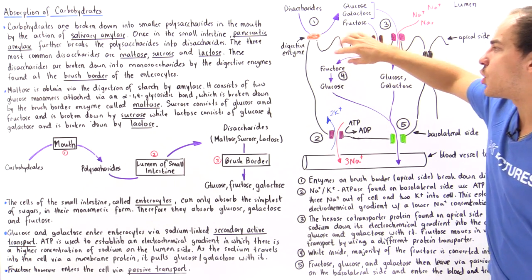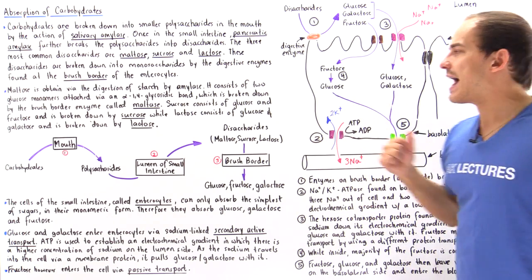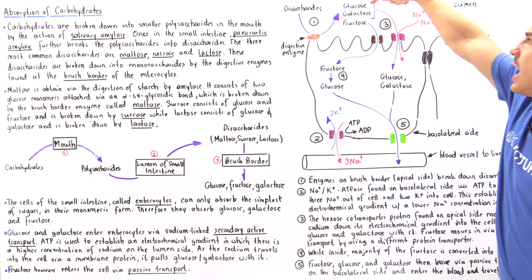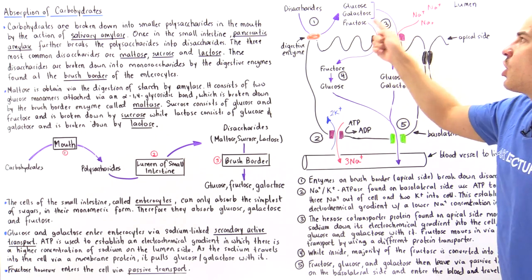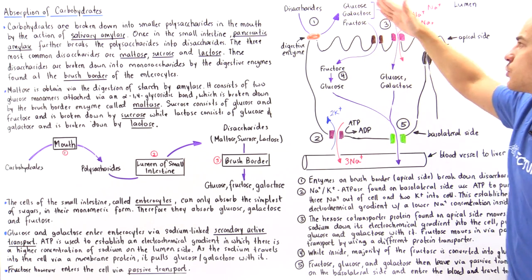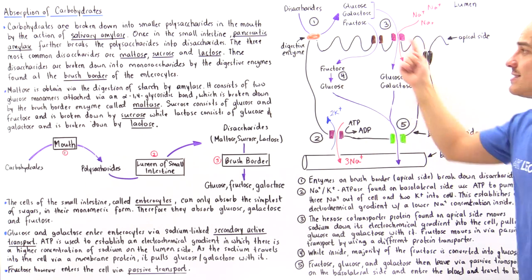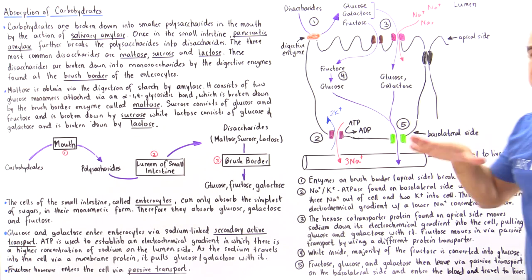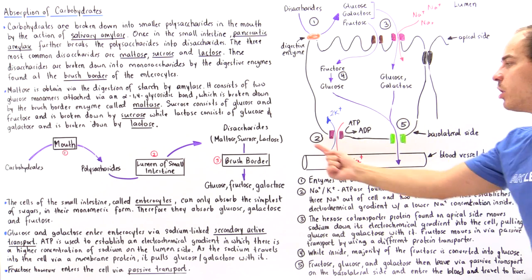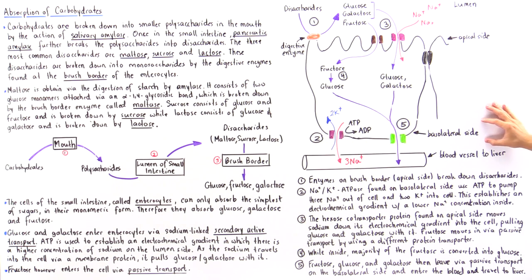Once fructose is inside the cytoplasm, the majority of fructose is broken down into glucose. Before glucose and galactose can move into the cytoplasm of the cell — in this single enterocyte — something has to happen on the other side of the membrane. This other side is known as the basolateral side, or the basal side, which points towards our blood vessels.